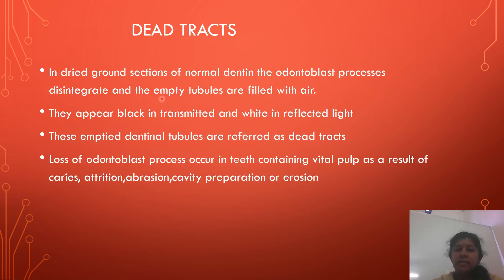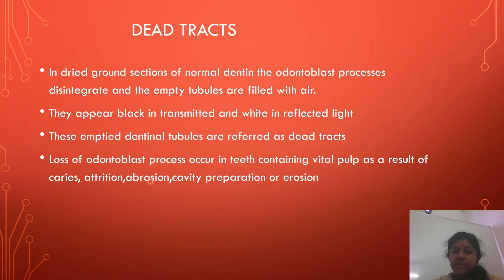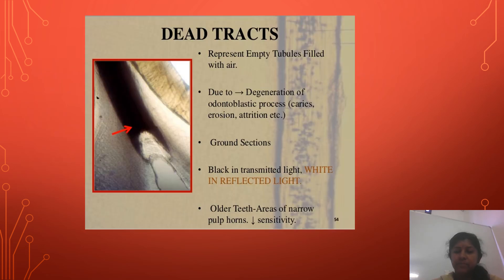Dead tracks are seen in ground sections of normal dentine. The odontoblast process disintegrates and the empty tubules are filled with air. They appear black in transmitted light and white in reflected light — these empty dentinal tubules are called dead tracks. Loss of odontoblast process occurs in teeth containing vital pulp as a result of caries, attrition, abrasion, cavity preparation, and erosion. These are commonly seen in older teeth in areas of narrow pulp horns, and formation of these tracts decreases the sensitivity of teeth.